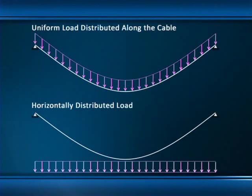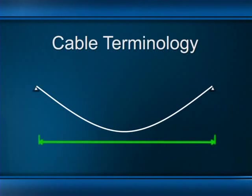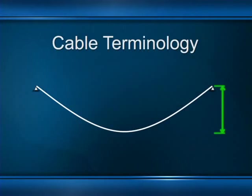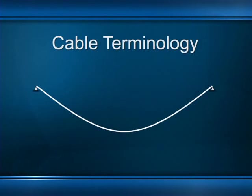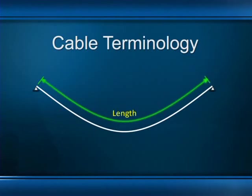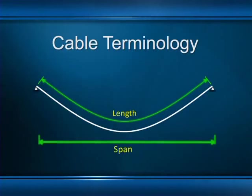Some terminology: the horizontal distance from support to support is called the span of a cable. The vertical distance from the supports down to the lowest point in the cable is called the sag. When I refer to the length of a cable I'm talking about the curved distance — the amount of cable you'd need to buy at your local hardware store. The cable's length is always somewhat greater than its span.